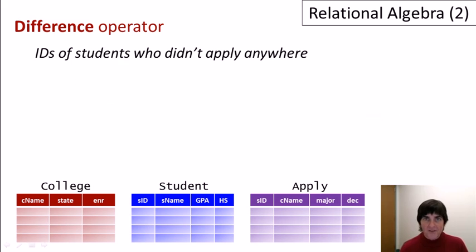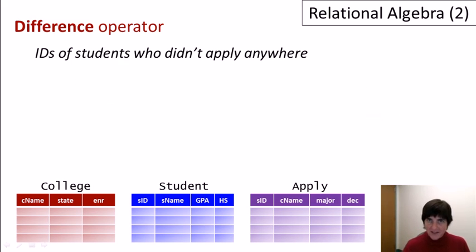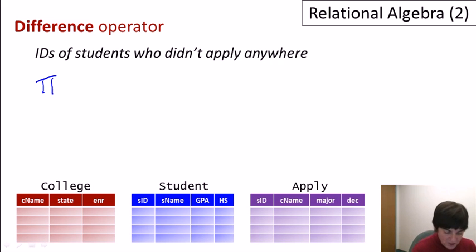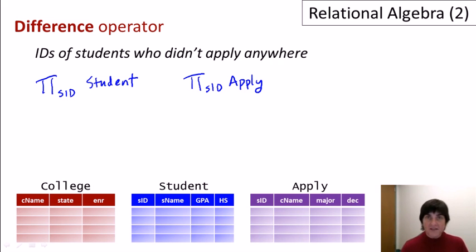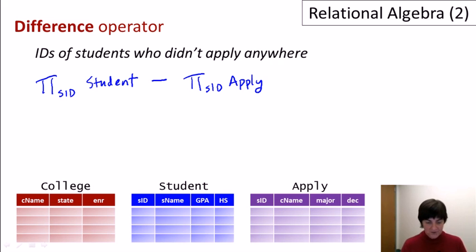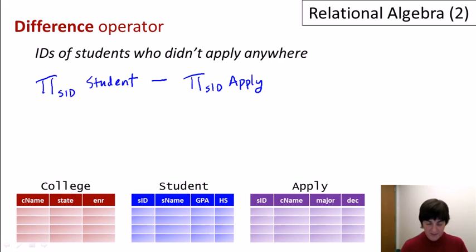Our next set operator is the difference operator, and it can be extremely useful. For example, suppose we want to find the IDs of students who didn't apply to any colleges. We project the student ID from the student relation — giving us all student IDs — then project the student ID from the apply relation, which gives us IDs of all students who have applied somewhere. We take the difference operator, written with a minus sign, and that gives us the result: all student IDs minus those who have applied somewhere.